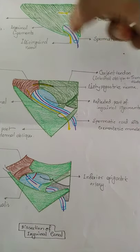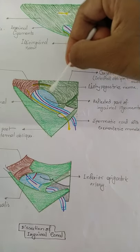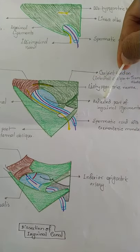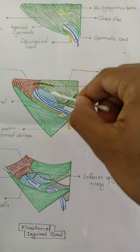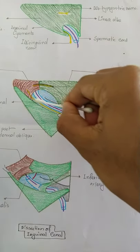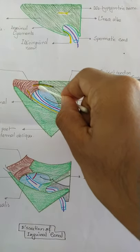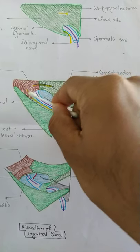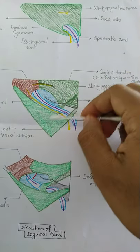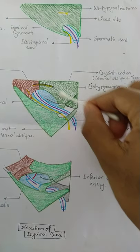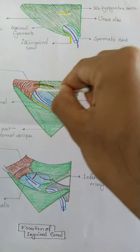Posteriorly, behind these two layers, is the fascia transversalis — shown as the blue layer. The deep inguinal ring is formed by the fascia transversalis.